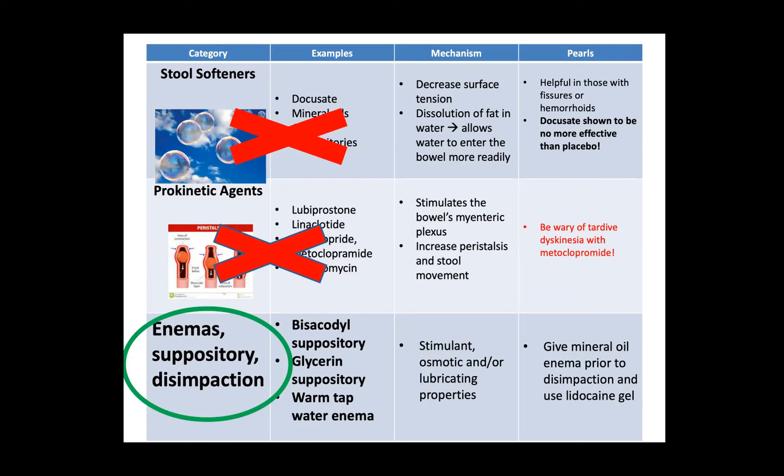It's critically important to diagnose an impaction before starting treatment — this is why the rectal exam is so key. If you give laxatives from above you can actually make matters worse if the patient remains impacted. So first you disimpact, then begin laxatives from above. To disimpact, try manual disimpaction, warm tap water enemas, bisacodyl suppositories, glycerin suppositories — sometimes a combination of all of the above. High colonic enemas actually means hanging the enema bag at the ceiling and making use of gravity.